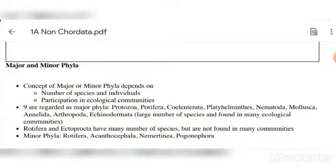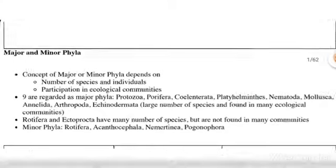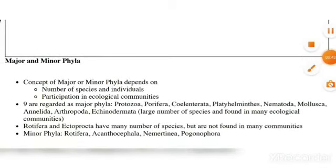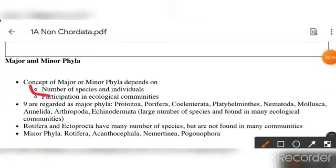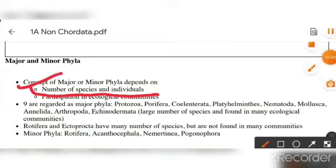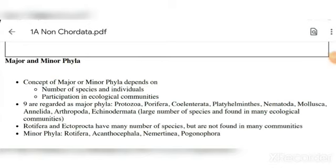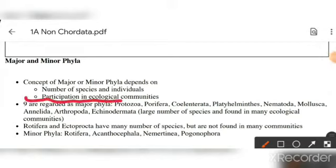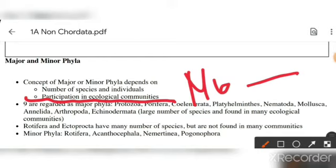Invertebrate animals are divided into two categories: major phyla and minor phyla. On what basis are these phyla divided? The first basis is the number of species and individuals. The second point is the participation in ecological communities. Both these points — number of species and participation in ecological communities — form the basis for dividing invertebrates into major and minor phyla.